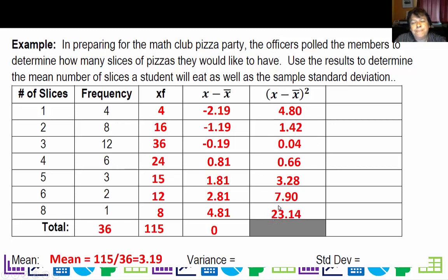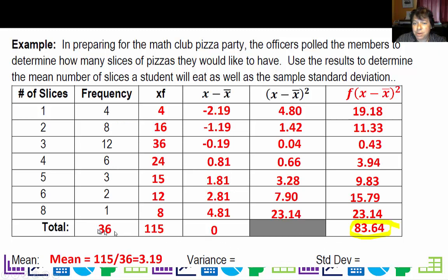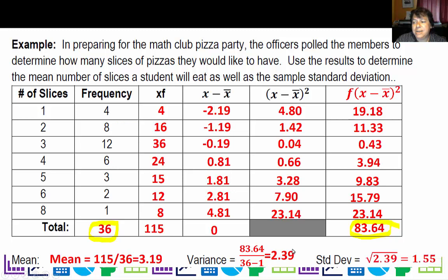But do I just add all these squared values up? No, because I actually have 4 of the 4.80s, 8 of the 1.42s, and 12 of the 0.04s. Instead of writing each one out, I take the same approach and multiply by the frequency. Here is what I get for the products of deviation-squared times frequency. Adding them all up and dividing by n minus 1 — since we're almost always using samples — gives 83.64 divided by 35, which is 2.39. The standard deviation is the square root of that, or roughly 1.55.